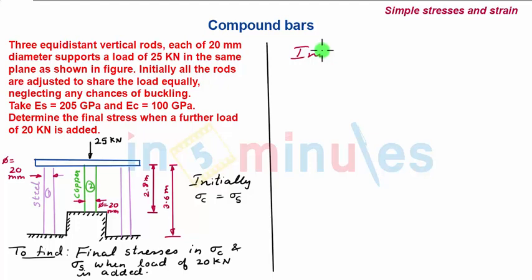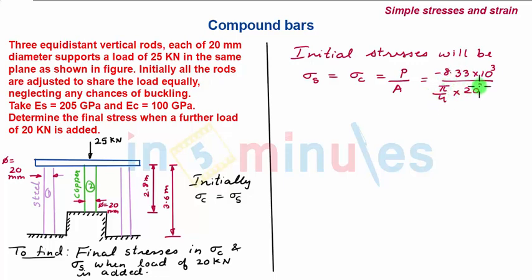Also the initial stresses will be σS is equal to σC is equal to P by A. Now since the stresses on the single steel rod and copper rod is same, the load is -8.33 × 10³N upon area π/4 × 20². So this comes out to be -26.52 N/mm² and it is compressive.